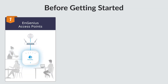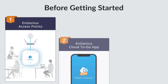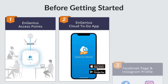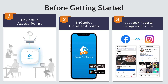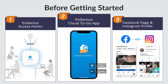As a business owner, make sure you have three preliminary things ready before setting up Facebook Wi-Fi for your customers. First of all, have your Ingenious Cloud access point registered and connected to the internet via a gateway or router. Secondly, download the Ingenious Cloud2Go app and login to your managed network.